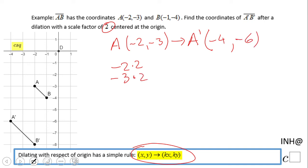We can do the same thing for B which is (-1, -4). That becomes B' which is -1 times 2 equals -2, and -4 times 2 equals -8. So B' is (-2, -8).